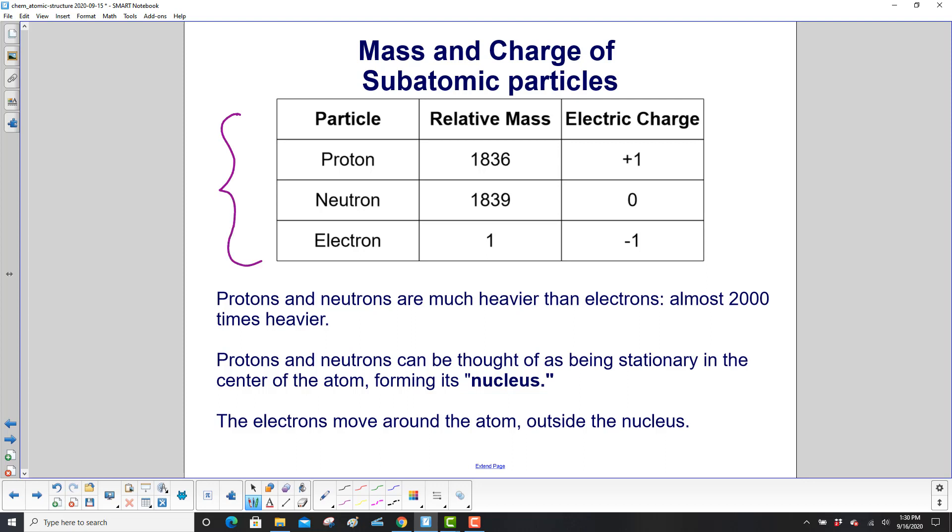Protons and neutrons are much heavier than electrons, almost 2,000 times heavier. The exact relative masses are right there. Neutrons are actually a little bit heavier than a proton and they're both almost 2,000 times as heavy as an electron.